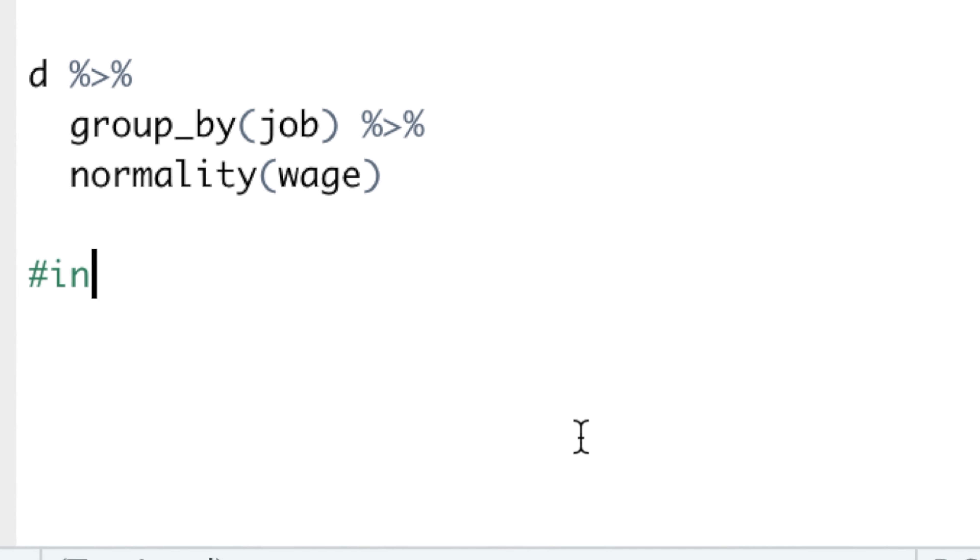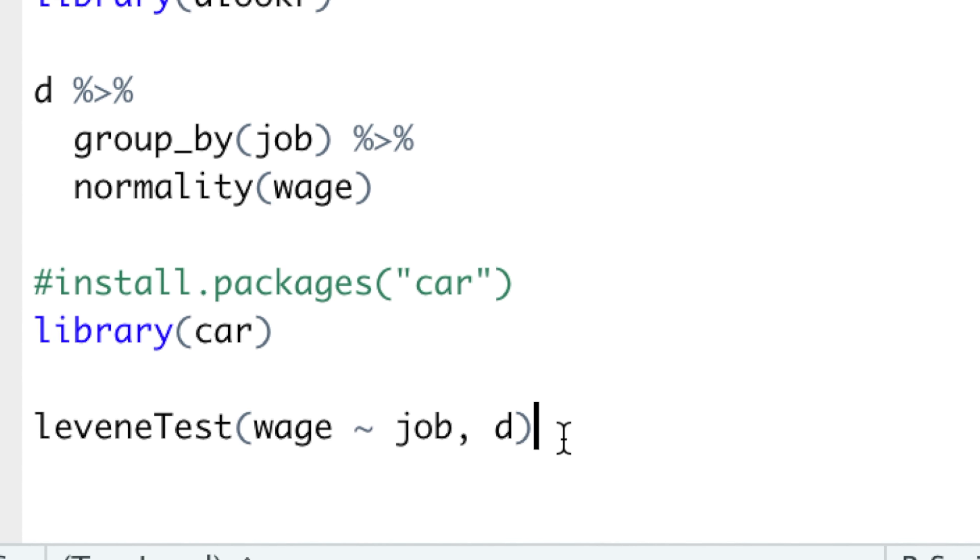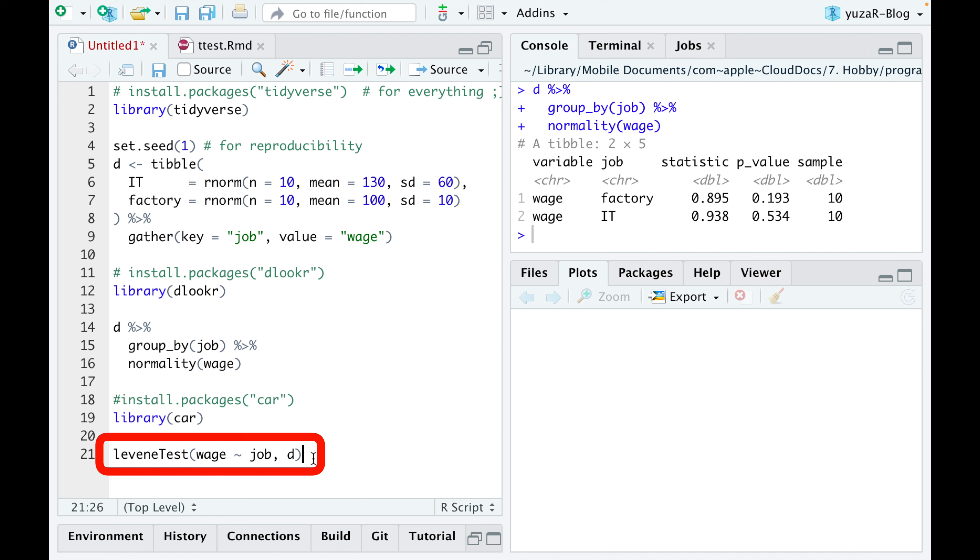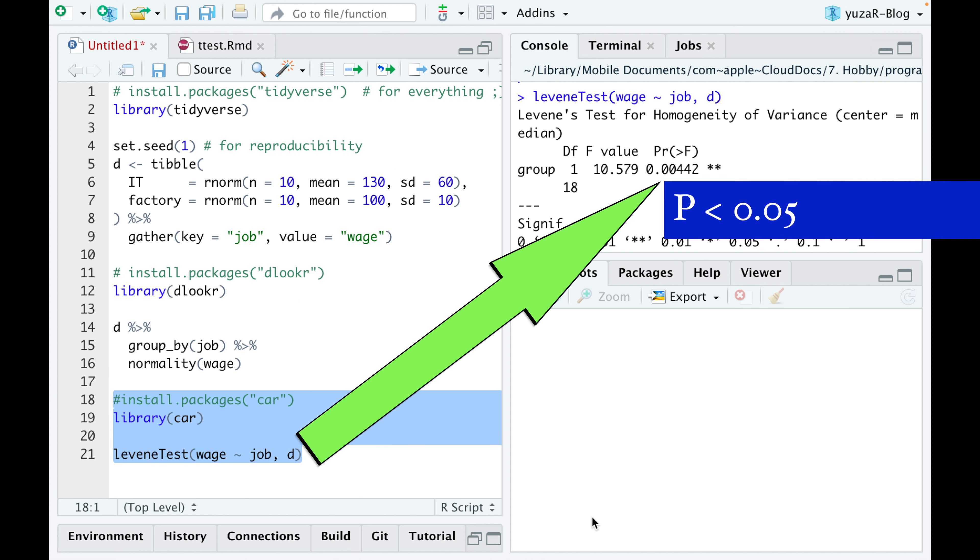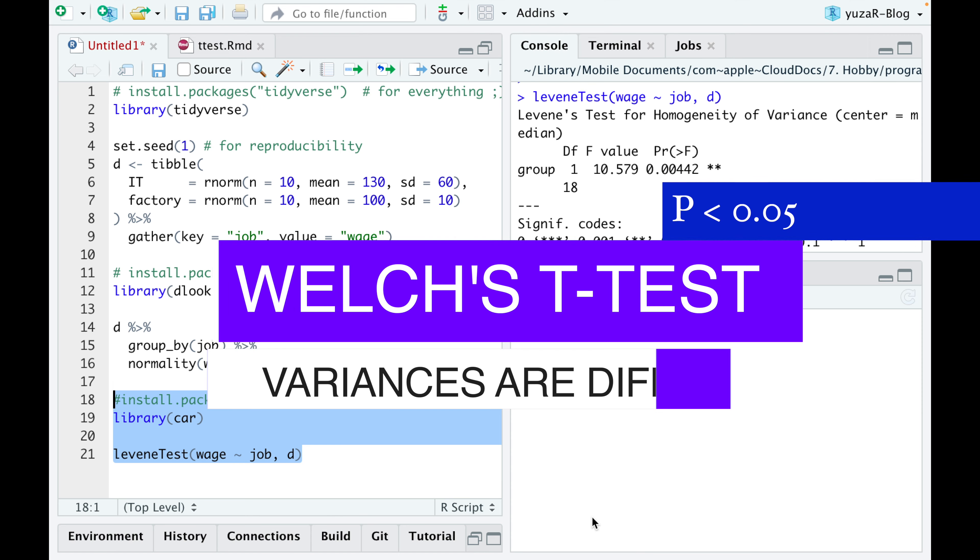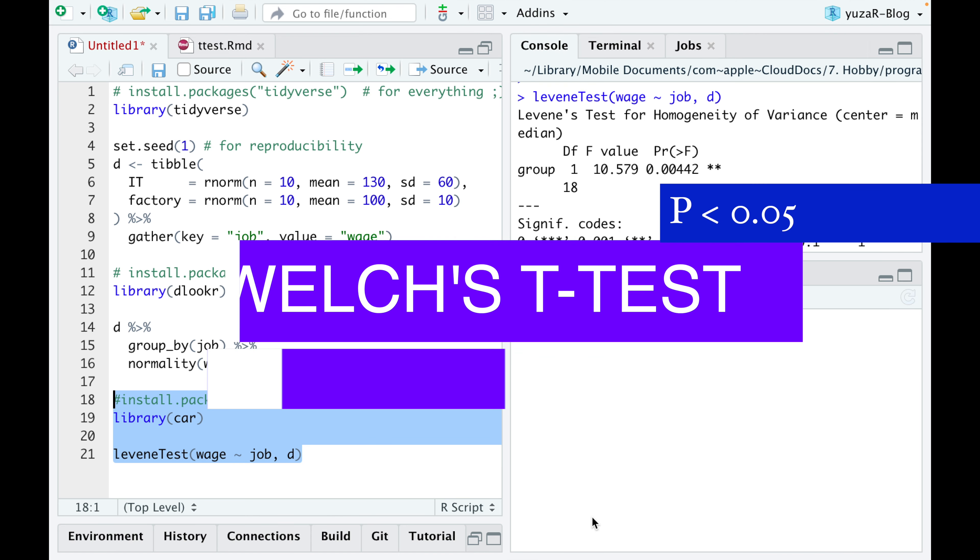Levene's test for homogeneity of variances helps to decide which t-test to use. The Levene test function from car package shows a small p-value, which tells us that our variances differ and that we need to use Welch t-test.